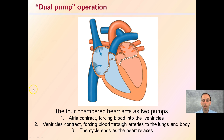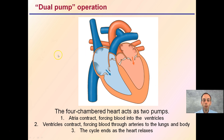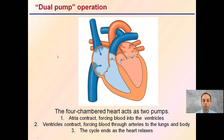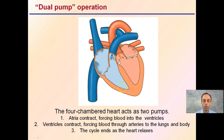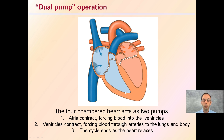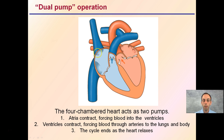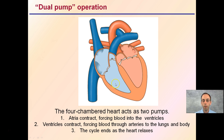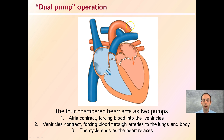In dual pump operation, as this gif shows, the four-chambered heart acts as two pumps. The atria contract, forcing blood to the ventricles. Then the ventricles contract, forcing blood through the arteries to the lungs and the body. The cycle ends, the heart relaxes, and then repeats. Here we see the atria sending blood to the ventricles, which then pump it — in one case to the lungs, in the other to the rest of the body.